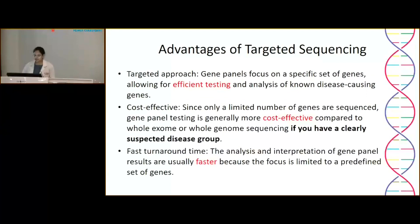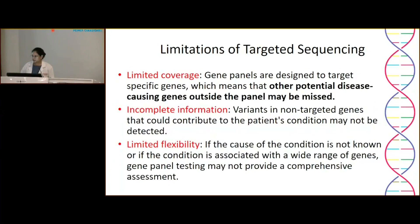Advantages of targeted sequencing: it is comprehensive, gives efficient testing, is cost-effective, and is faster compared to other NGS techniques. Limitations include that other potential disease-causing genes outside the panel may be missed, variants of non-targeted genes may not be detected, and it has limited flexibility — once a panel is designed, it is difficult to add a newly reported gene to an already running panel.